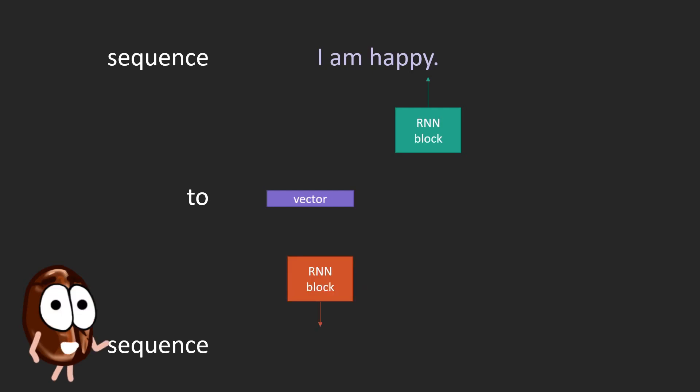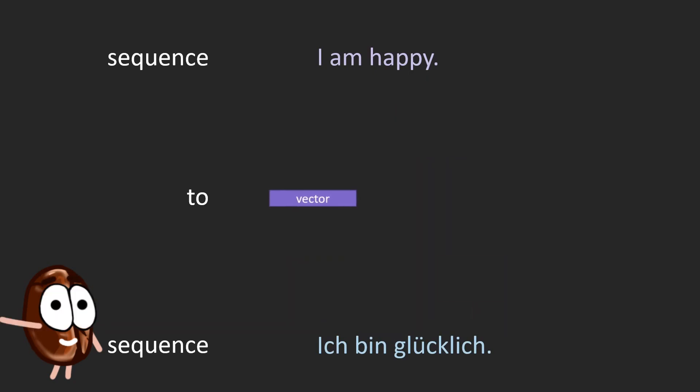Then from this vector, another RNN block is decoding to the target sequence. In this case it is decoding to the translation of the sentence. So, one part here in green we can call from now on the encoder and the one in orange-red is the decoder.